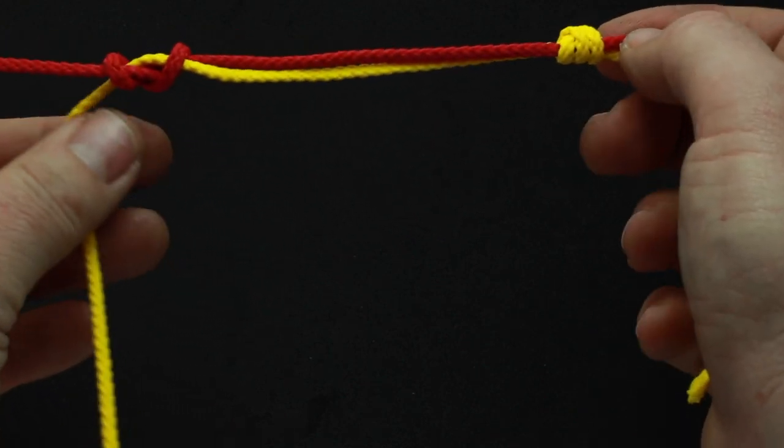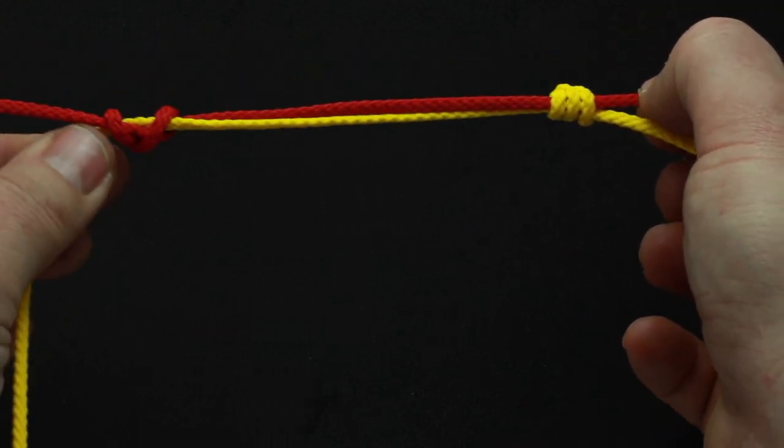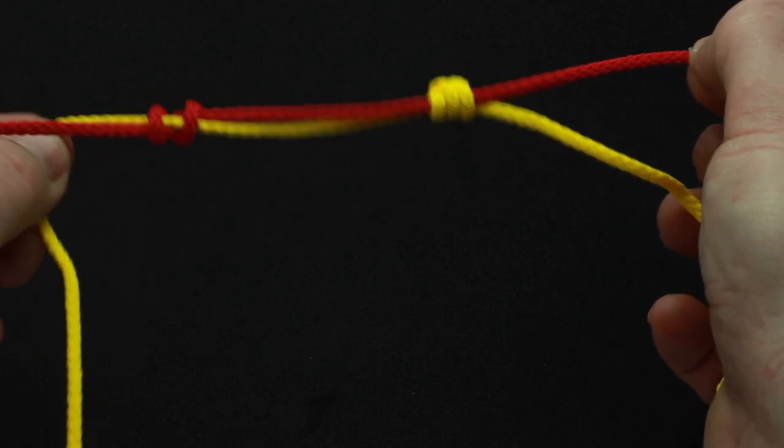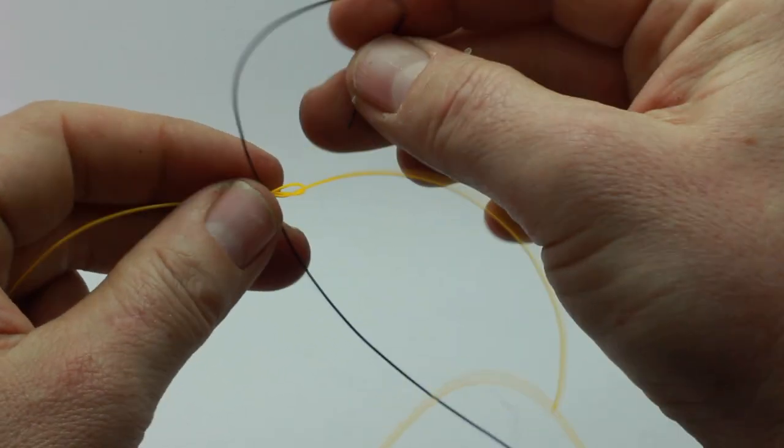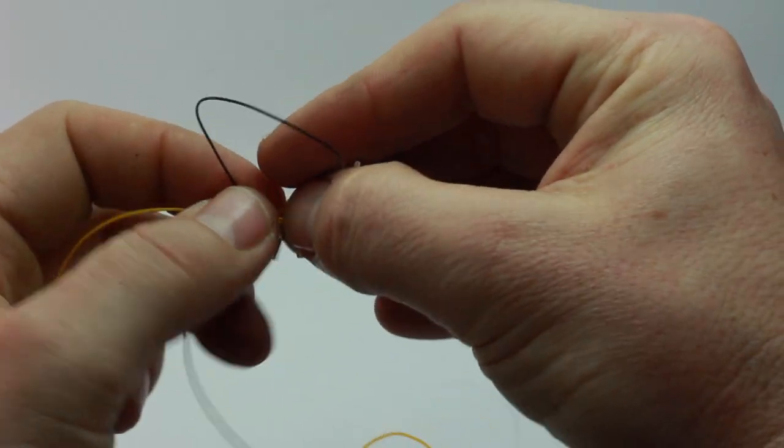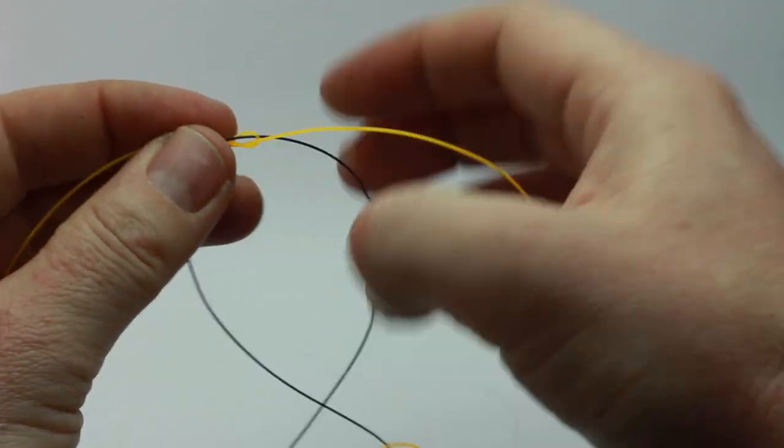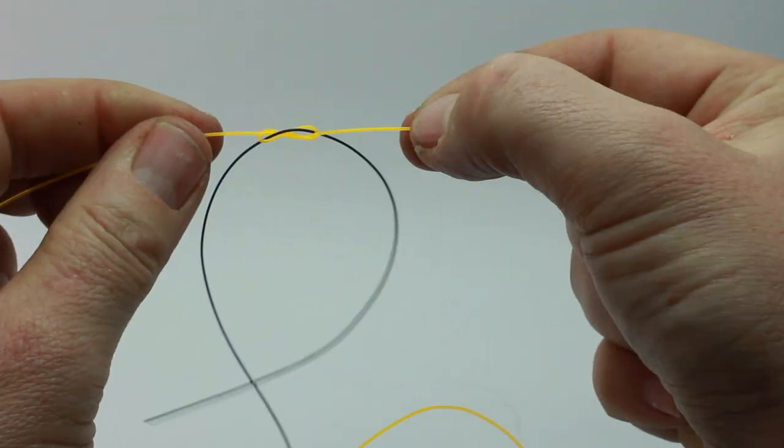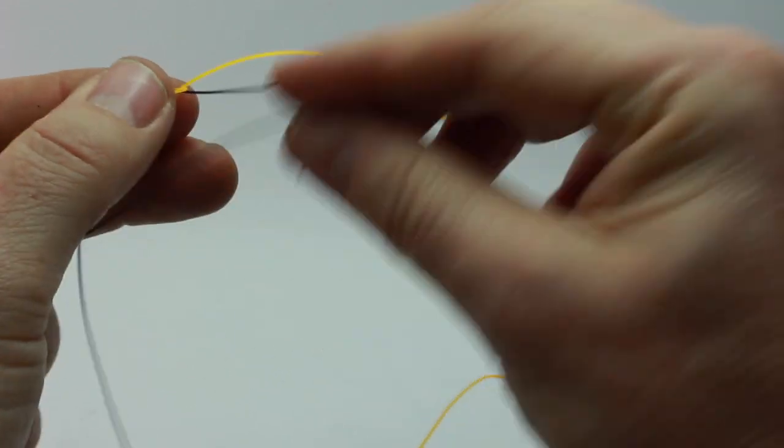The yellow line, which will be attached to your mackerel feather, is the one that's coming through. Again, I'd use clear line for all of this, but I'm using the black so you can see it better. So I've come up through the first loop, down through the other loop.